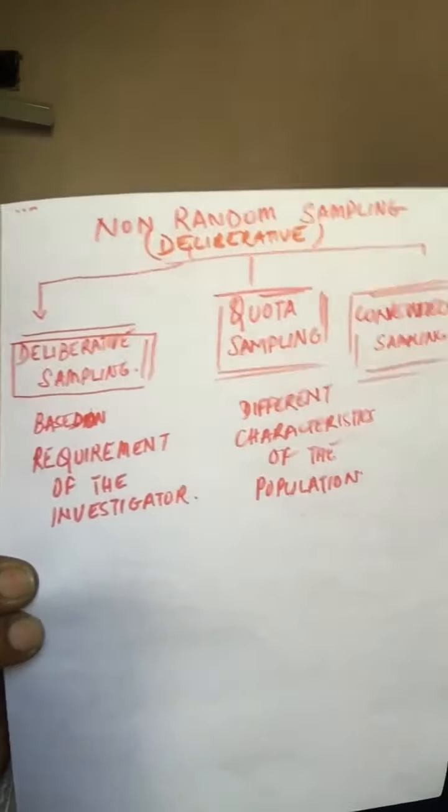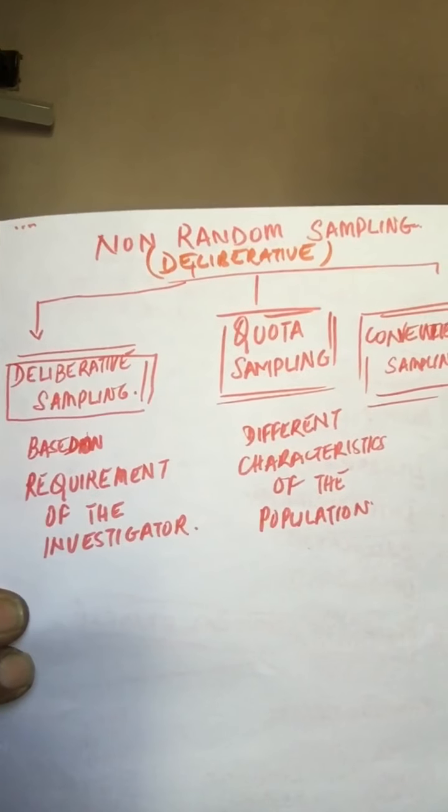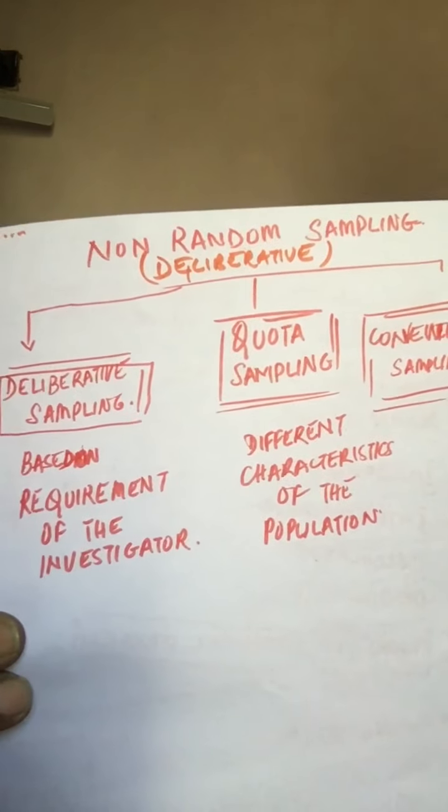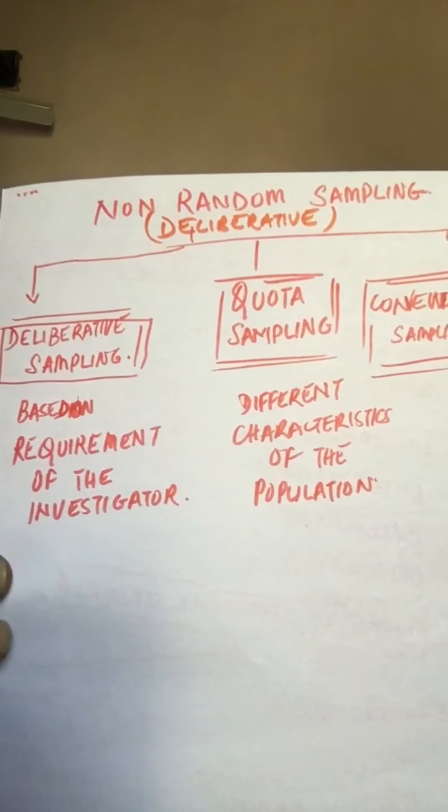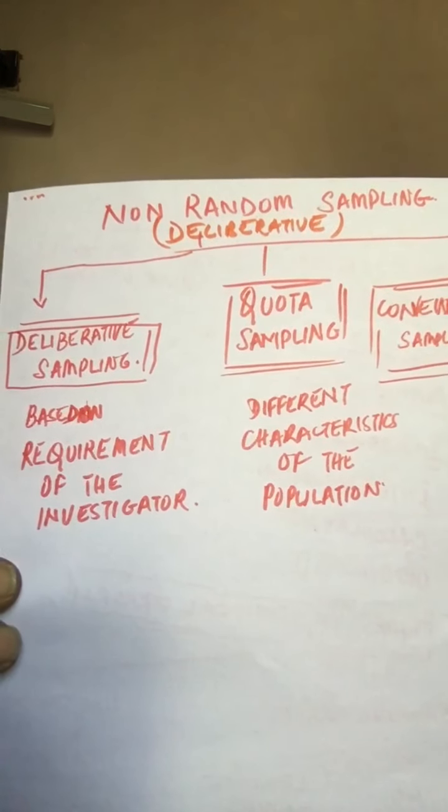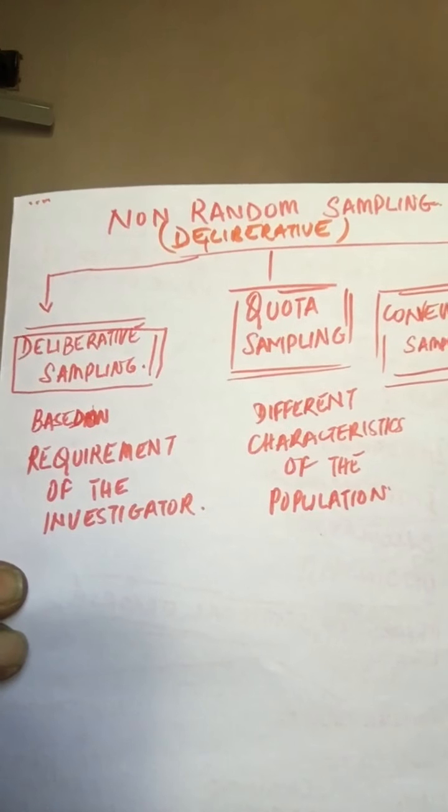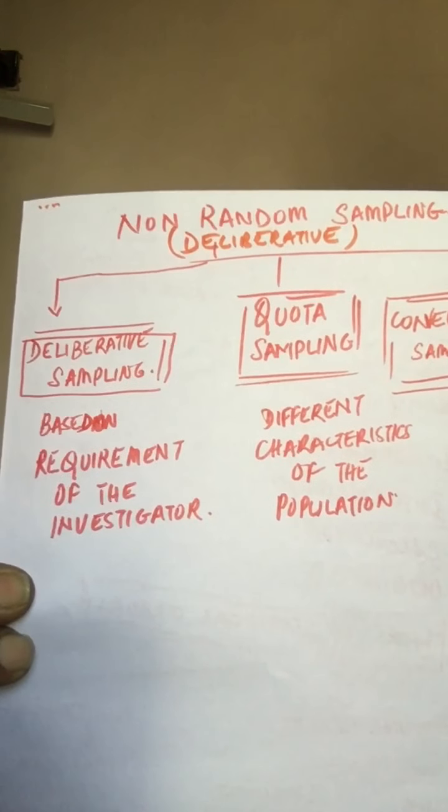We are going to do non-random sampling, which is also known as deliberative sampling. Non-random sampling is done on the basis of the convenience and judgment of the investigator, and not on the basis of probability.